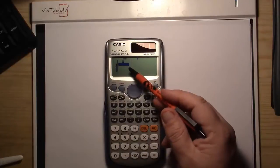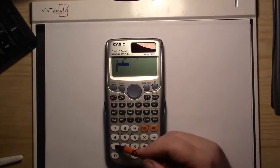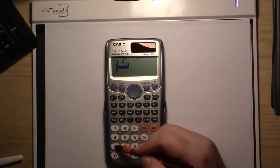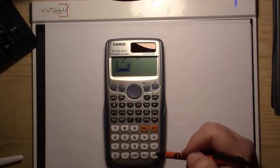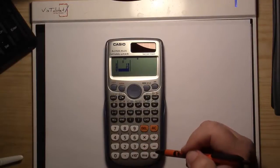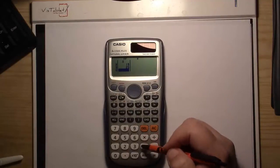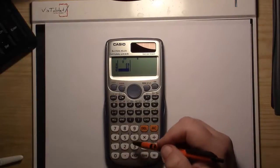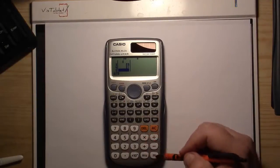It will ask us to input our numbers. We'll enter 13 equals, 19 equals, 23 equals, 31 equals.